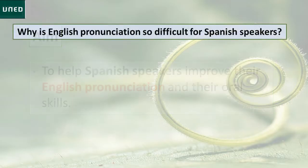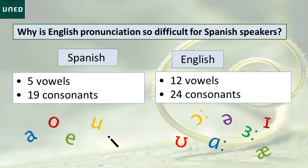Why is English pronunciation so difficult to Spanish speakers? The main reason is that English and Spanish phonetic systems are very different. Spanish, for example, has five vowels, whereas English has 12, but none of the English vowels exactly coincides with any of the Spanish vowels. And the same happens with consonants — 19 in Spanish and 24 in English.